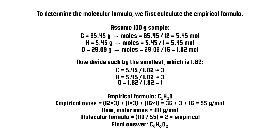Now, divide each by the smallest, which is 1.82. C equals 5.45 divided by 1.82 almost equals 3. Empirical mass equals 12 times 3 plus 1 times 3 plus 16 times 1 equals 36 plus 3 plus 16 equals 55 grams per mole. Molar mass equals 110 grams per mole. Molecular formula equals 110 divided by 55 equals 2 times empirical. Final answer: C6H6O2.